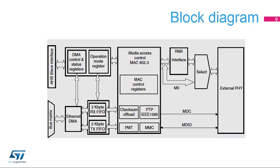This slide presents the peripheral block diagram. The Ethernet peripheral embeds its own DMA for autonomous direct memory interface, internal FIFOs for Rx and Tx queues for data flow management, a media access controller, or MAC, supporting most functional features detailed in previous slides, offload engines, precision timing protocol, power management, or PMT, and MAC management counters for statistics gathering. A PHY interface block supports media-independent interface, or MII, and reduced MII.